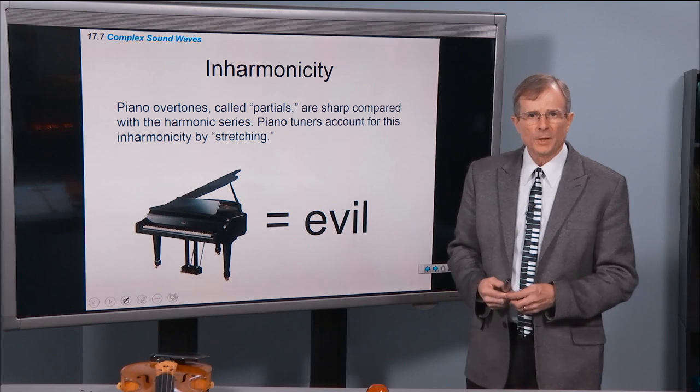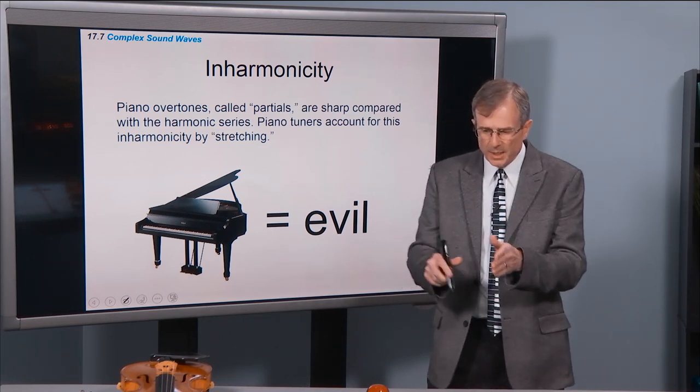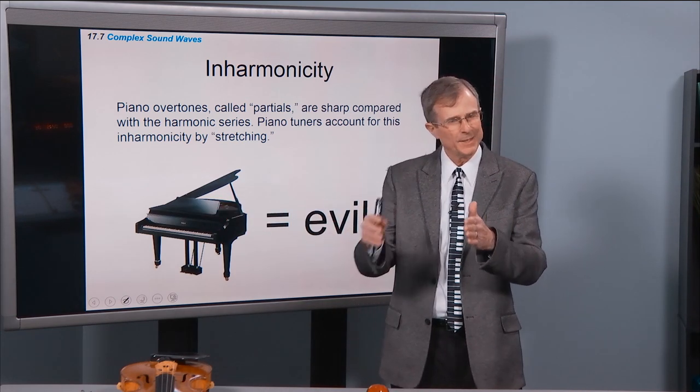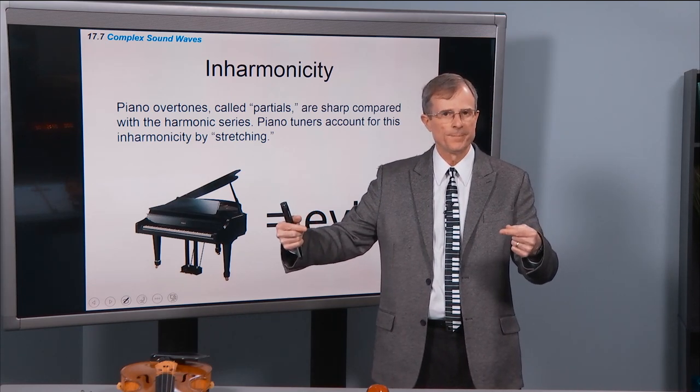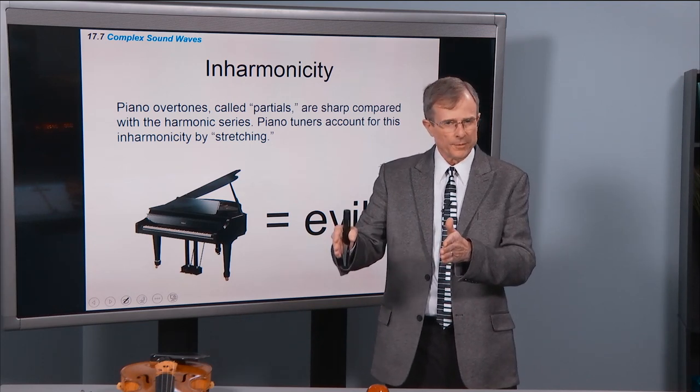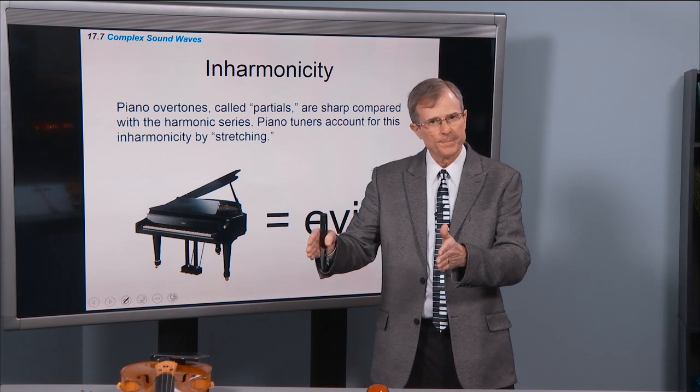Piano overtones are called partials. They're not called harmonics because they're sharp. So if you play a C, it generates a whole series of what we would have called harmonics, but they don't obey the harmonic series, and the reason is those piano strings are stiff. And so because of that stiffness,